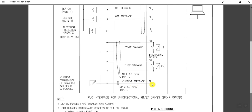Another signal is the current feedback — AI, analog input. A current transducer is located inside the switchgear, and it provides a 4 to 20 milliamp DC signal. This analog signal representing the current is transferred to the DCS or PLC cabinet for indication purposes. For this we have used a 2-pair, 1 square mm cable.